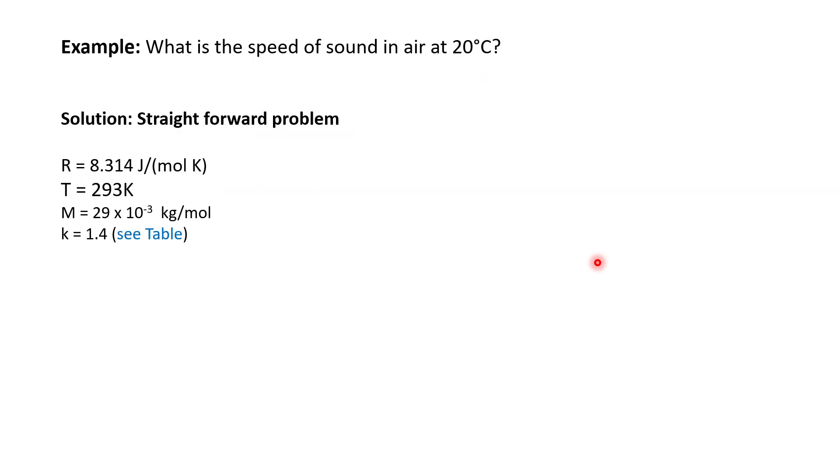This is a basic example. The question is: what is the speed of sound in air at 20 degrees Celsius? This is a straightforward problem. Based on the equation, we know that we will need some of the parameters.